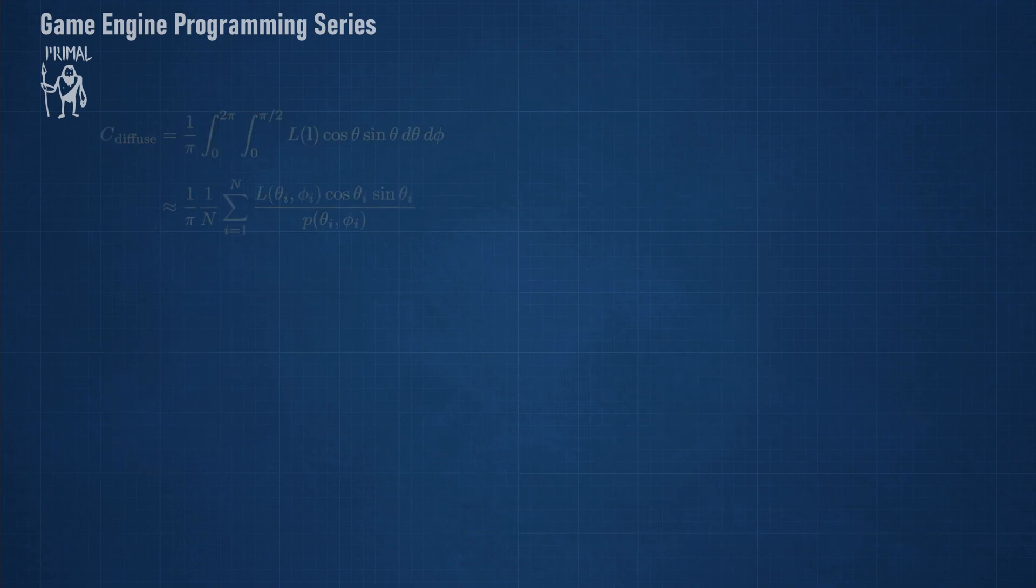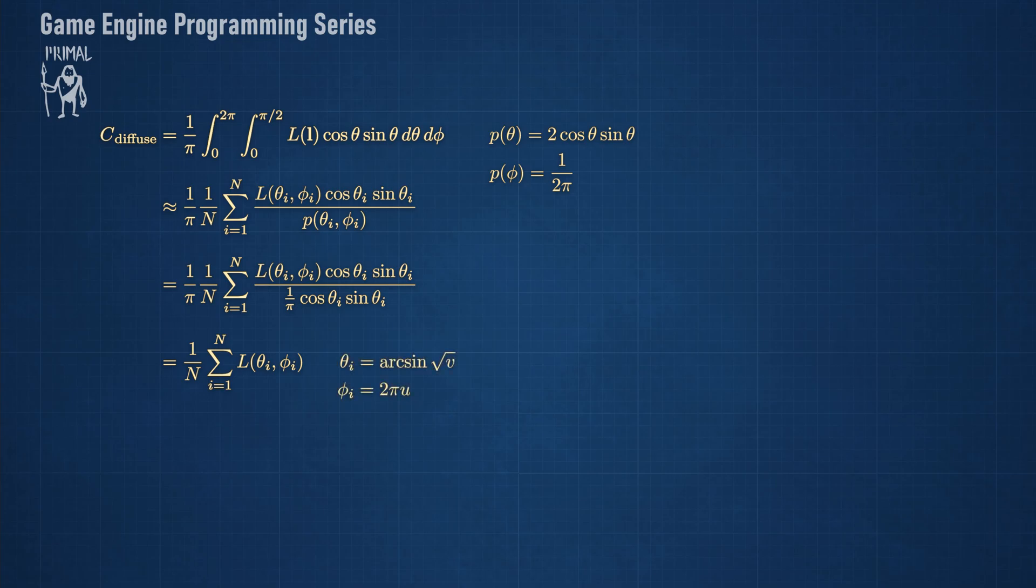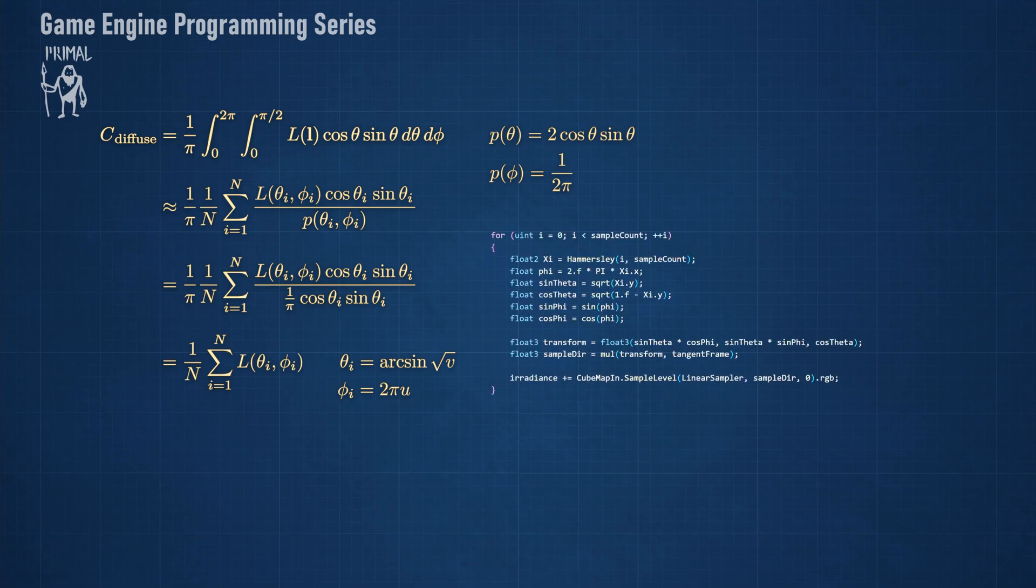Now that we know the probability distribution function, we can fill it in this sum. We can see that all these terms cancel out, and we are left with a simple sum of all sampled pixel values on the hemisphere, divided by the number of samples, where the samples are taken at angles theta and phi using these relations. As you'd expect, this is just the average of the sample's pixel values. And this is exactly what we implemented in the shader code here.